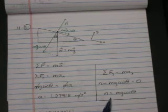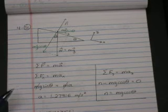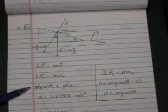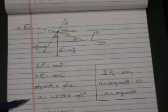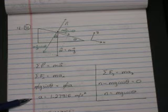In the x direction, we get the x component of weight is mg sine theta equals ma. The m's divide out, and we get an acceleration of 1.27916 meters per second squared.